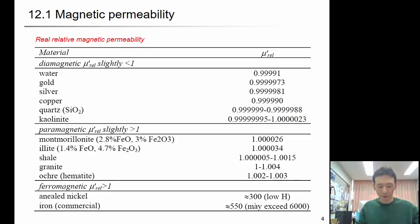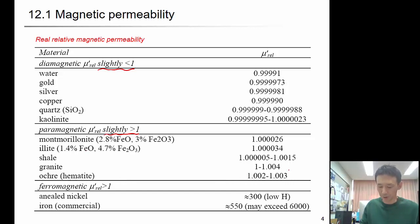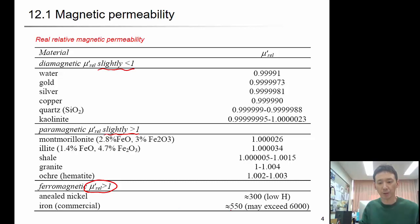This table shows the range of the real magnetic permeability. For diamagnetic material: water is 0.99991, gold is 0.9999 — you can see it's very close to 1 — and kaolinite is almost 1. Paramagnetic material is slightly greater than 1. And if it's ferromagnetic material, then the real value of relative permeability will be much higher than 1: nickel is 300, iron is 550, and it cannot exceed a value greater than 6,000.